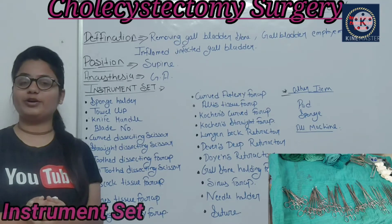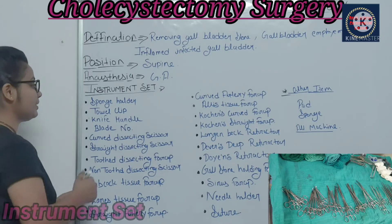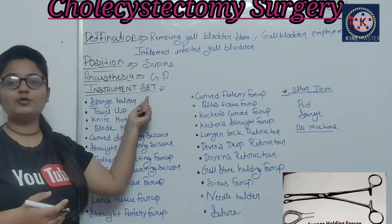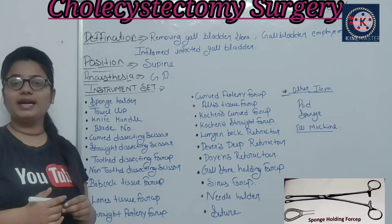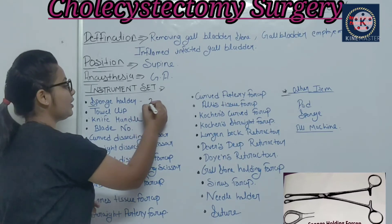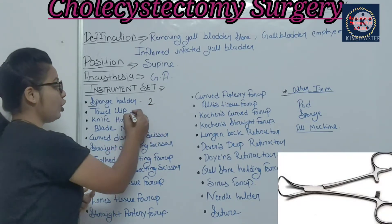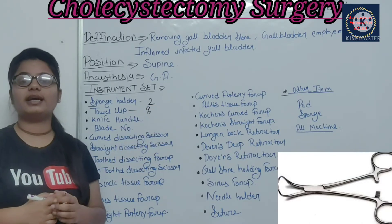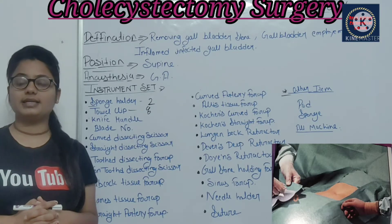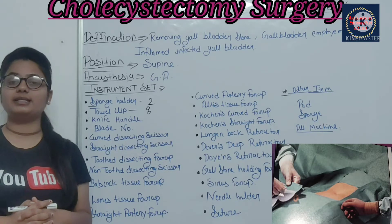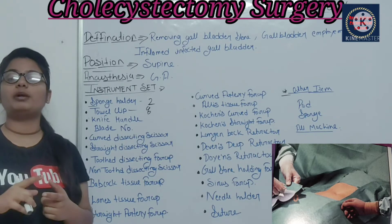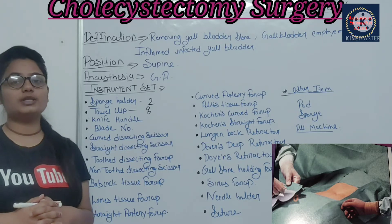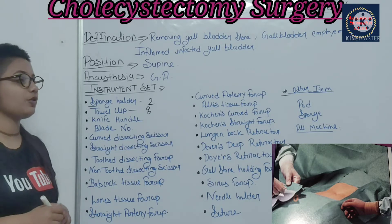Now we will talk about instrument trolley preparation. We will know how the instrument trolley is prepared. First is the sponge holder — this is a general instrument, used to paint and prep the patient's operation site. You need 2 sponge holders. Next are towel clips — you need 8 towels. The towels are used for draping the patient's operative area, which is covered by 4 towel clips to fix the drapes.